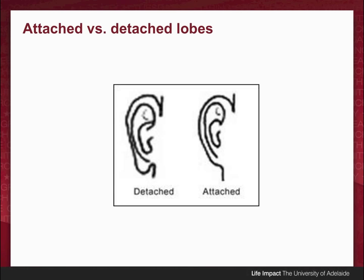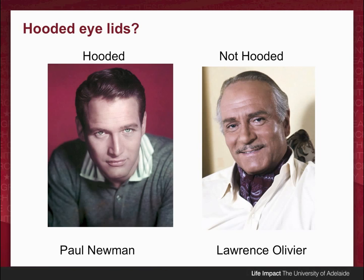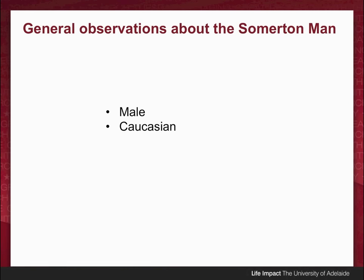Another feature is he has attached lobes. Here's a comparison between detached and attached lobes. He also has a very pronounced nasal arch — not a flat arch, but a nice curved one. He doesn't have hooded eyelids. For example, the actor Paul Newman has hooded eyelids because the upper eyelid goes straight down, whereas the actor Laurence Olivier has a non-hooded eyelid because he has a fold in that eyelid, as most people do. General observations are that the man is obviously male and Caucasian.